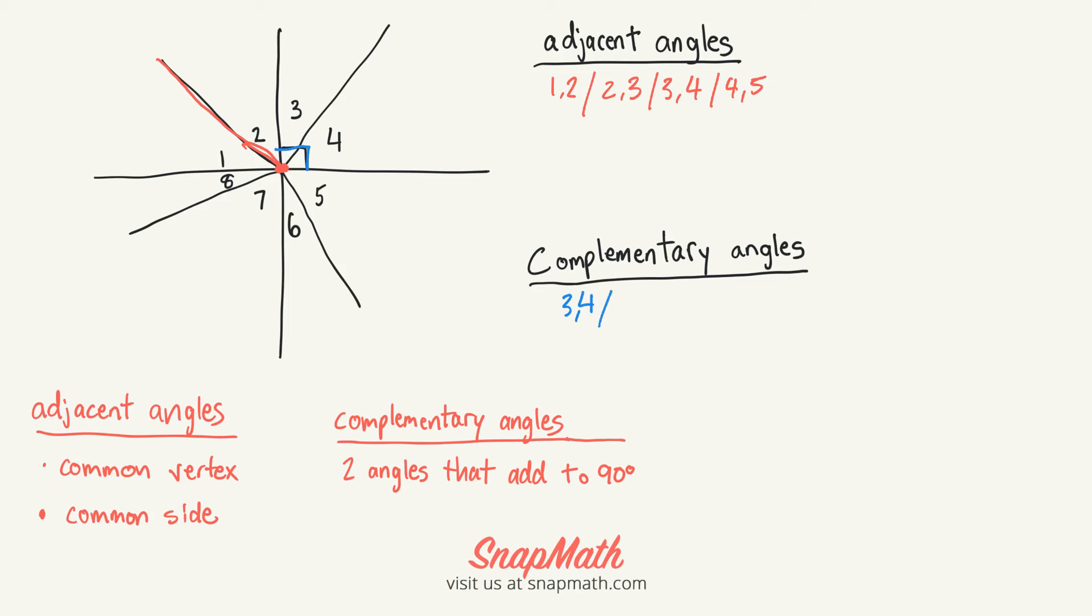Now, since this is 90 degrees here, that means this is 90 degrees, this is 90 degrees, and this is 90 degrees. So that will mean that 5 and 6 are complementary, 7 and 8 are complementary, and 1 and 2 are complementary.